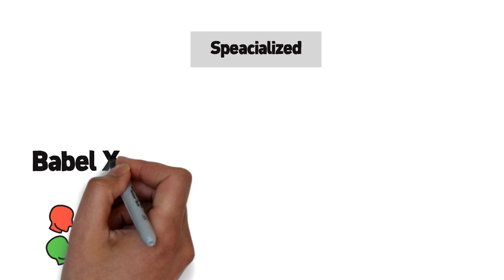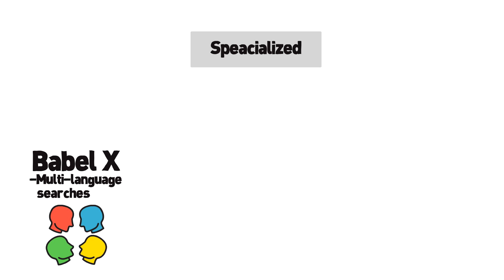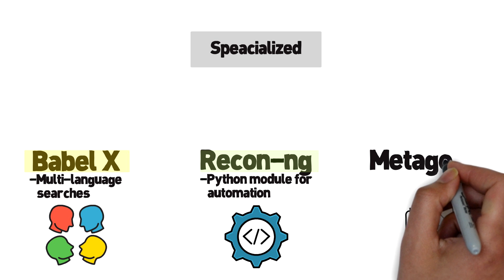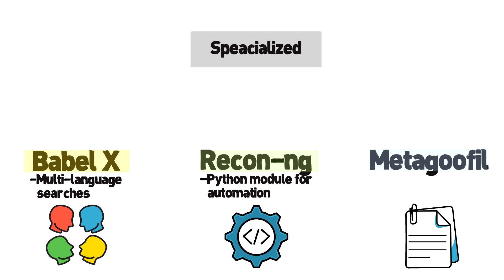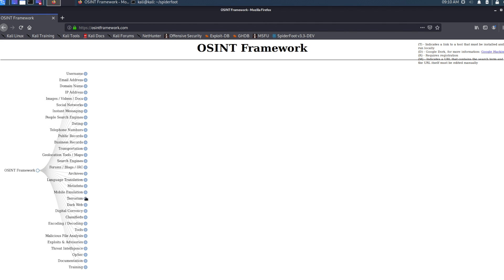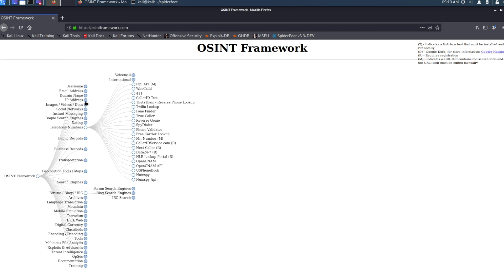Babel X is a multi-language search tool that can span across many resources in different languages — particularly useful when researching targets in a different country or using a different language. Recon-NG is more of a development tool based on Python that allows you to develop the kinds of searches you want based on modules, enabling developers to automate the OSINT process into their applications. Metagoofil is meant to extract metadata from public documents, extremely useful for researching things like business owner information or finding open documents that were not secured correctly. Of course, no OSINT research is complete without traditional sources like Google Hacking, Shodan, The Wayback Machine, and NetCraft. I'd also encourage you to check out and bookmark OSINTframework.com, which provides an excellent visualization and updated list of links categorized and subcategorized for easy lookups.